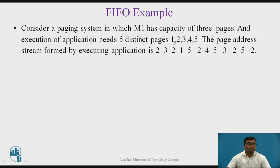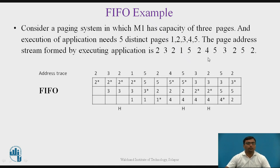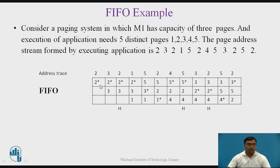The executing application needs to access these pages with a stream in this sequence — this is the sequence in which these blocks are accessed from the main memory. This is the solution for this example. Here we can see the same stream taken here. That is the address trace — the order in which the different blocks are accessed. According to the First In First Out method, block two is replaced first into the cache memory and is marked with a star.